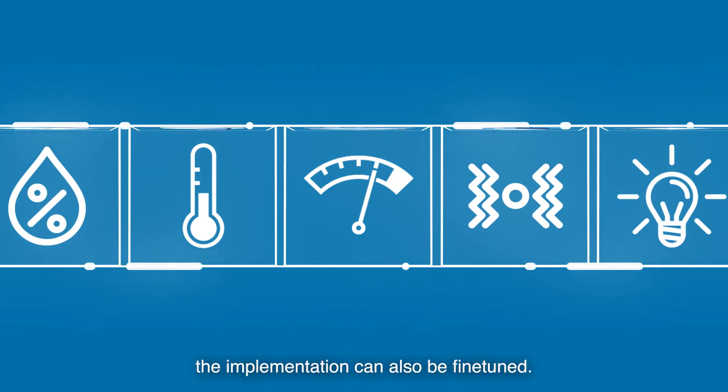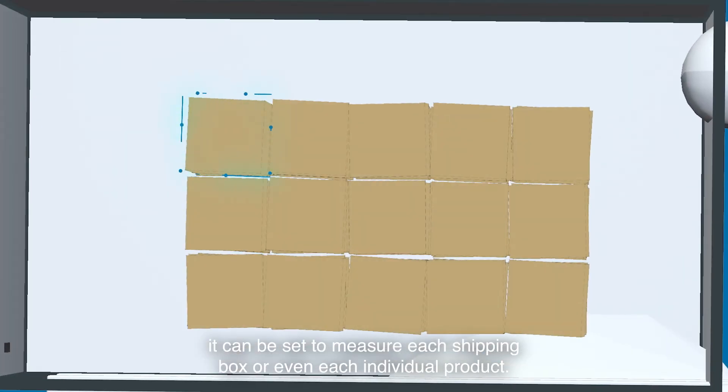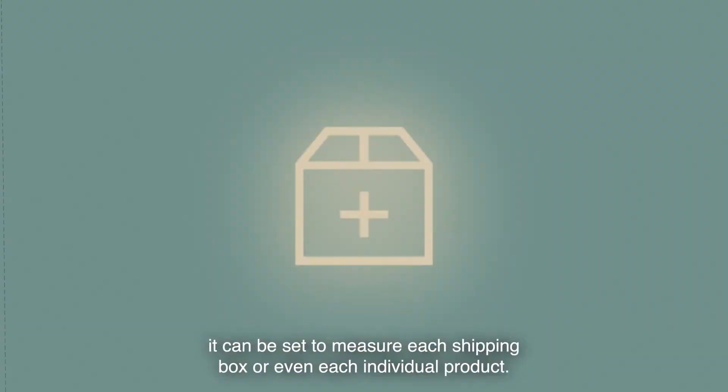And that's not all. The implementation can also be fine-tuned. For example, instead of gauging the temperature of the whole truck, it can be set to measure each shipping box or even each individual product.